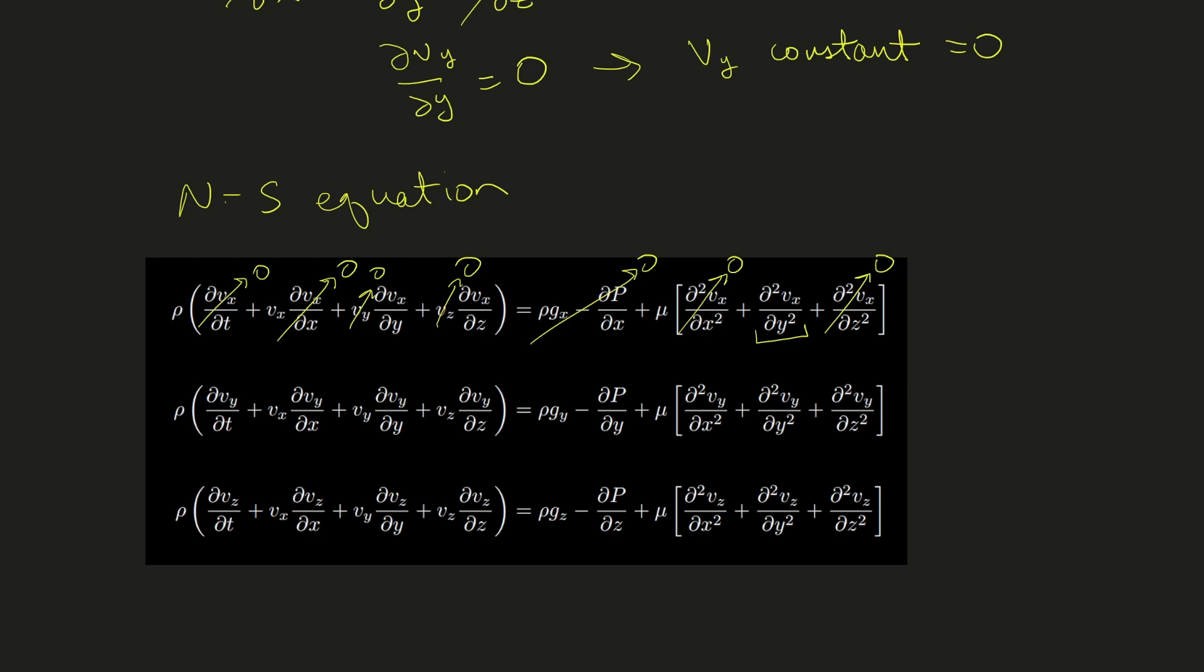In the y and z directions, we can similarly go through term by term. All of these terms cancel out because we don't have any flow in the y or z directions. We're left with these pressure components, which tell us that the contributions of pressure and gravity are equal to zero in the y and z directions.